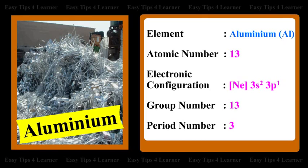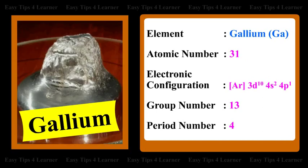For gallium, the atomic number is 31, the electronic configuration is [Ar] 3d¹⁰ 4s² 4p¹, the group number is 13, and the period number is 4.